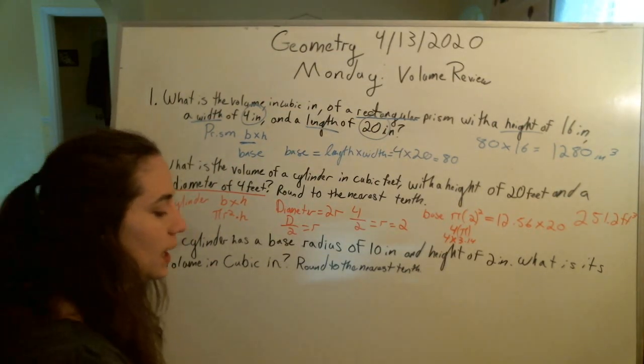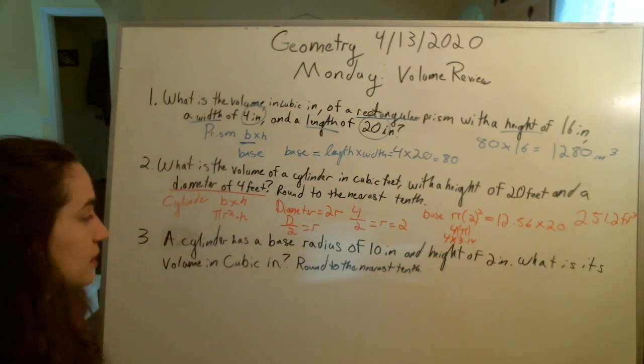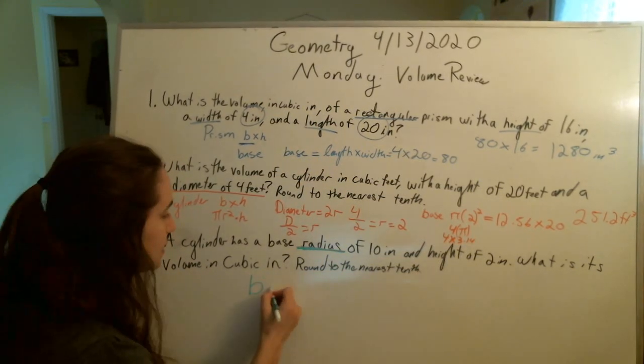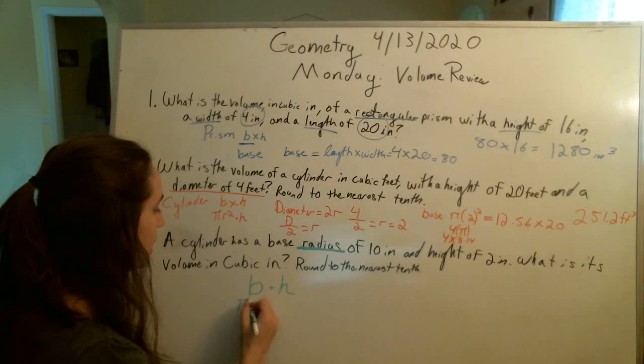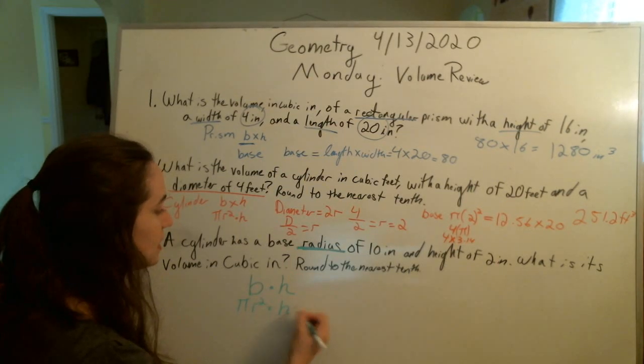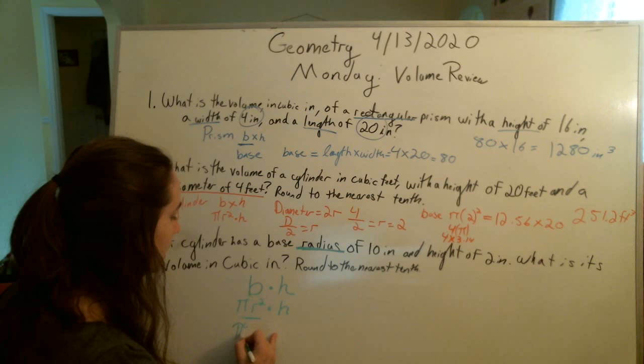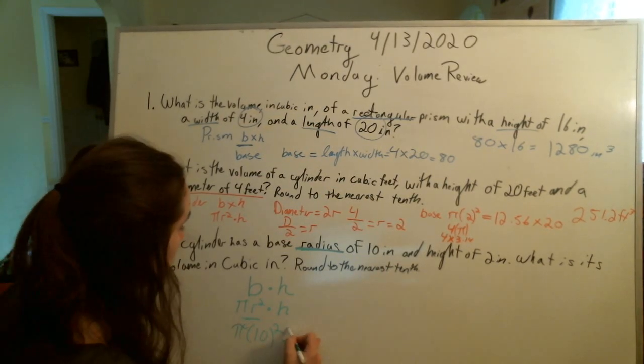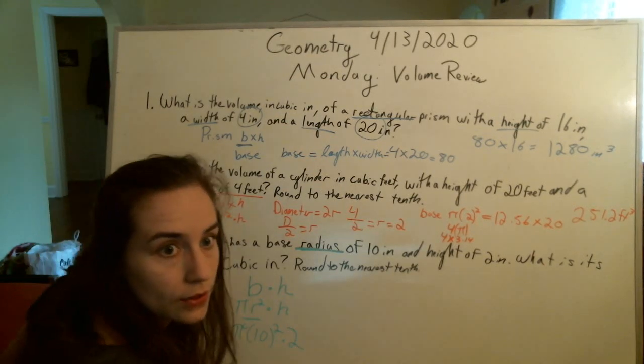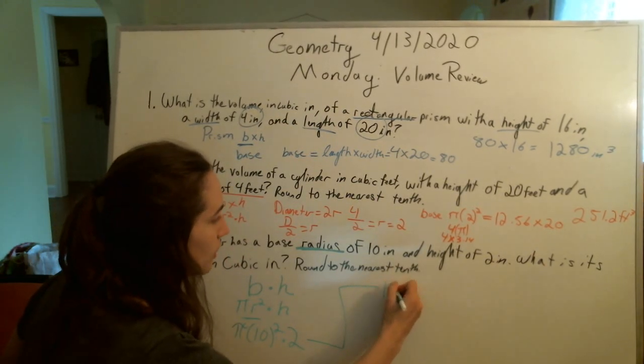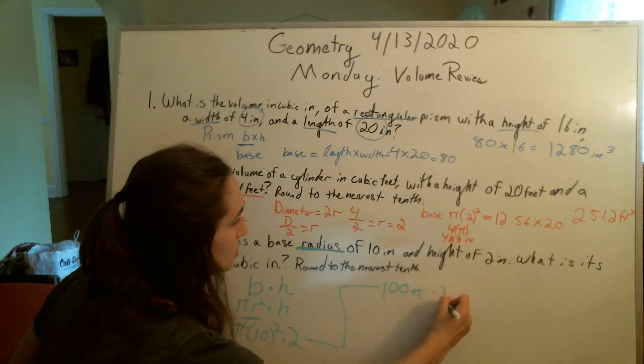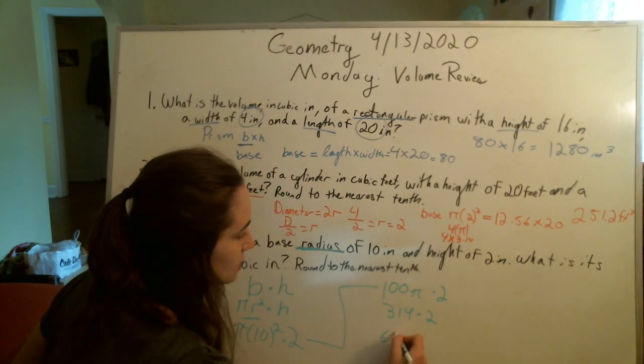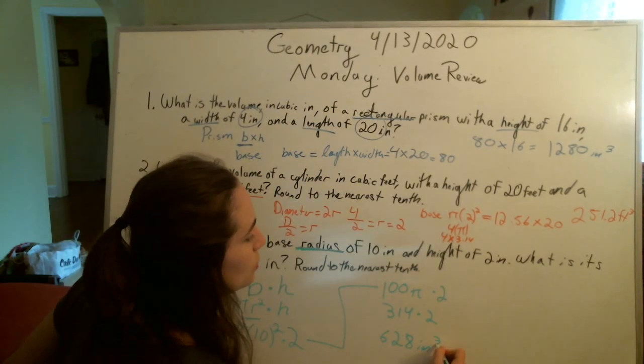Last one, another cylinder. This time, if it conveniently does give us the actual radius, our base times our height will be our pi r squared times the height. r squared is going to be pi times 10 squared times 2. Doing it in pieces. 10 squared is 100, so 100 pi times 2. That's 314 times 2, which is 628 inches cubed.